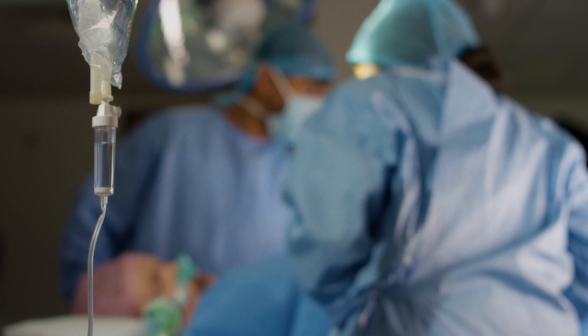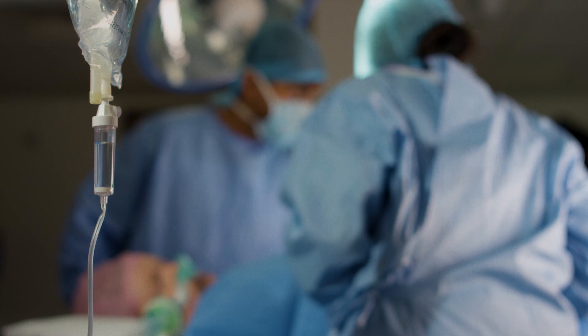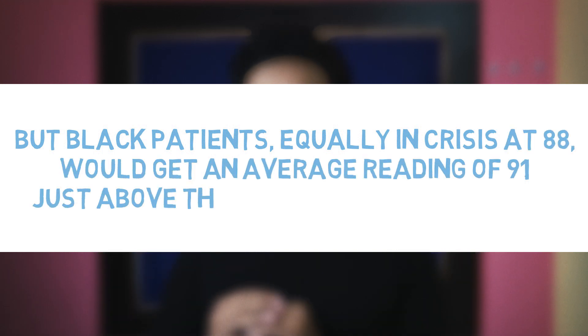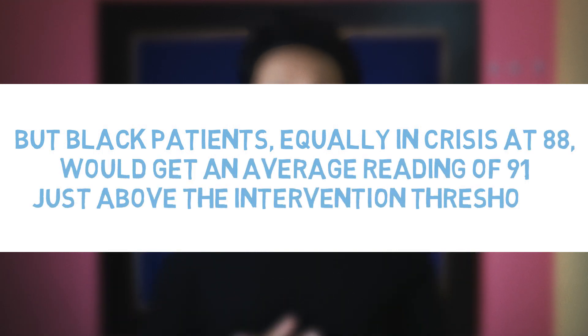Most hospital protocols now recommend starting oxygen at 90. In a mixed general population, a true blood oxygen saturation of 88% on average produces a pulse oximeter reading of 89–90 using the most common meter in hospitals. Guidelines would correctly suggest going on oxygen, but Black patients truly at crisis at 88% would get an average reading of 91, just above the intervention threshold.